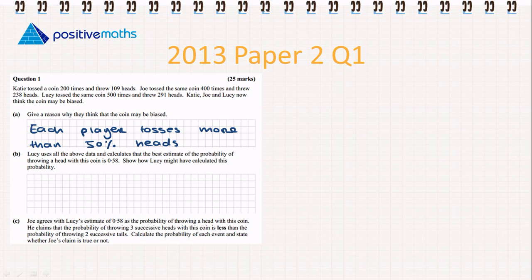For part B: Lucy uses all the above data and calculates that the best estimate of the probability of throwing a head with this coin is 0.58. Show how Lucy might have calculated this probability. The important note is that she uses all of the above data. We want to use all of the data to calculate the probability. The first thing we need to calculate is the total number of tosses.